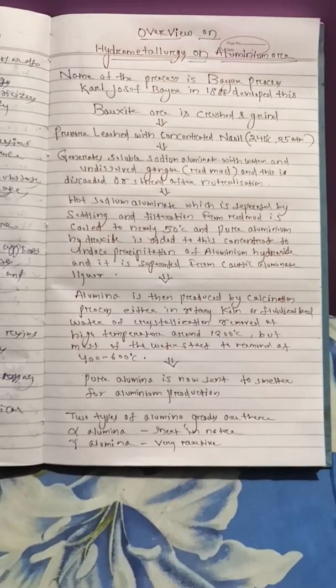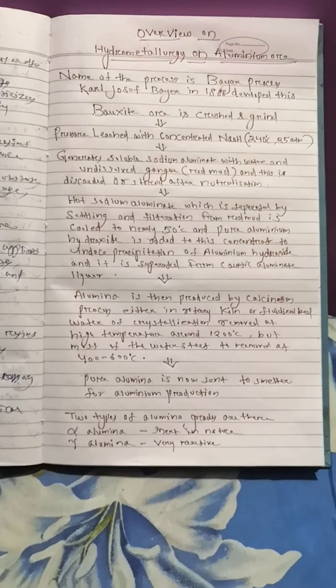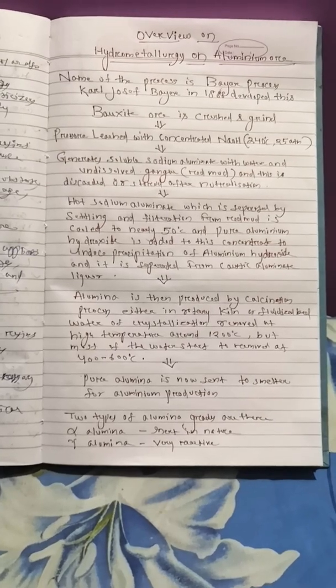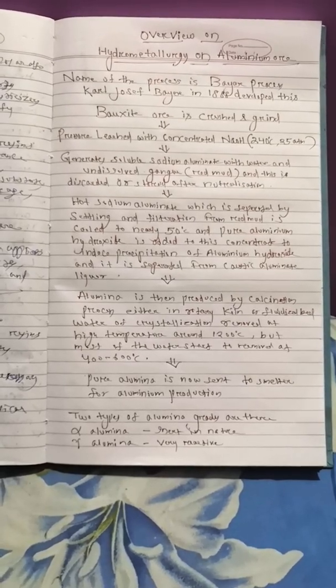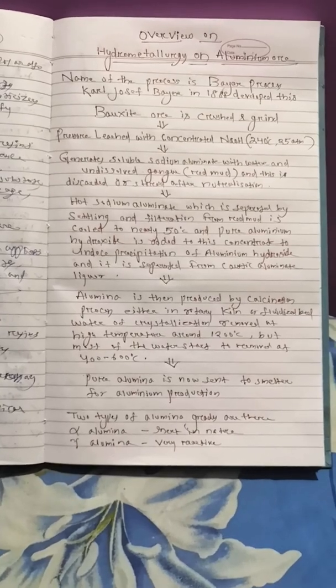This aluminum ore contains some gangue materials: Fe2O3, TiO2, and SiO2. These are the major gangue present in aluminum ore.